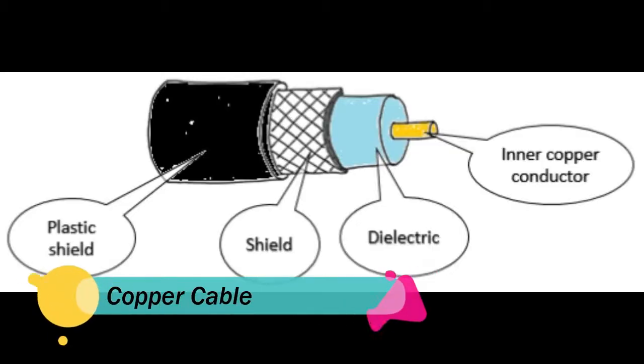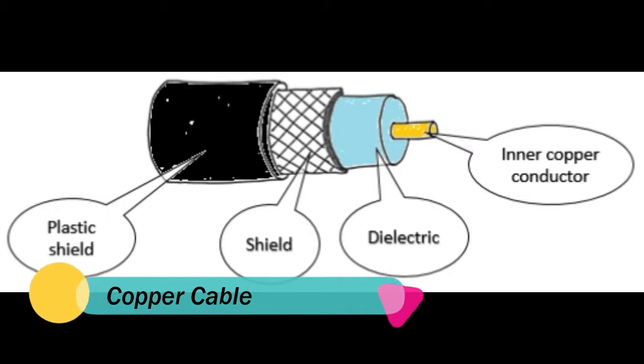Cables can transmit data a lot faster than the radio waves that wireless and Bluetooth use. And there are two types of cable you need to be aware of: copper cable and fibre optic cable. With copper cable, the data is sent using electronic signals down a copper core which is insulated against outside interference. This is the cheapest type of cable that you can use, and a lot of the old telephone networks used to use this technology, so it's widely available even in rural areas.